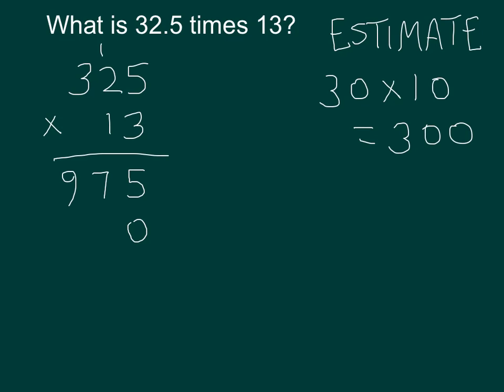There's my 0. 1 times 5 is 5. 1 times 2 is 2. 1 times 3 is 3. Time to add everything up. 5. 12 — carry the 1. 1 plus 9 plus 2 is 12 — carry the 1. 4.